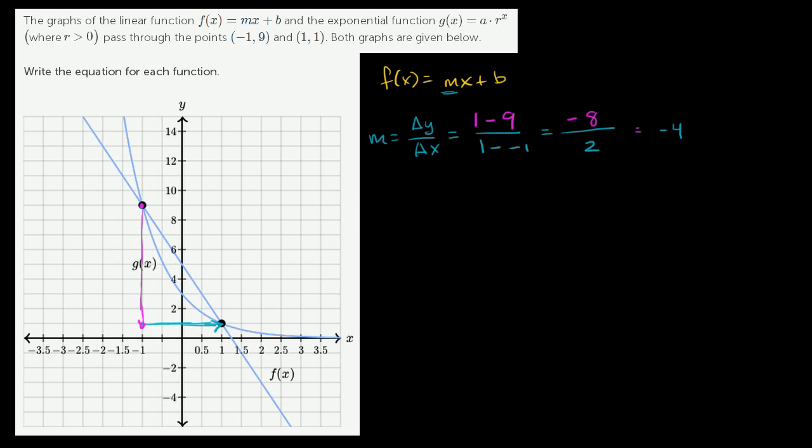So now we can write that f(x) = -4x + b. And you can see that slope right over here. Every time you increase your x by 1, you're decreasing your y by 4. So that makes sense that the slope is -4.